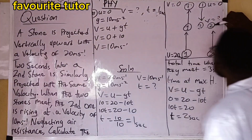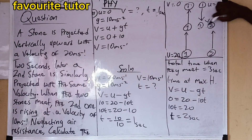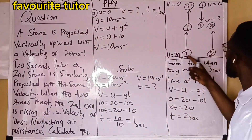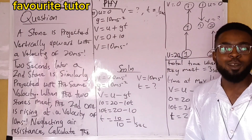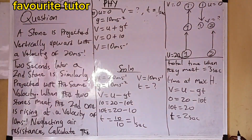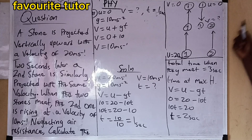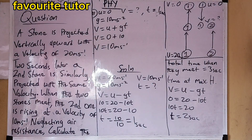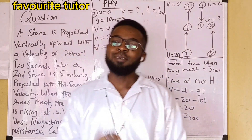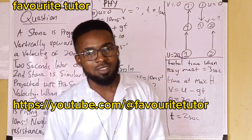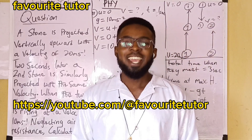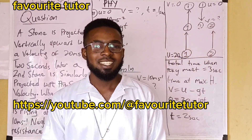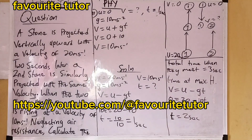Both stones have a velocity of 10 meters per second when they meet. The two stones were projected with the same velocity and we neglected air resistance, so the result is consistent. That brings us to the end of this episode. I'm still taking questions — feel free to send them. Please share the video and don't forget to subscribe to my YouTube channel. Thank you and God bless.